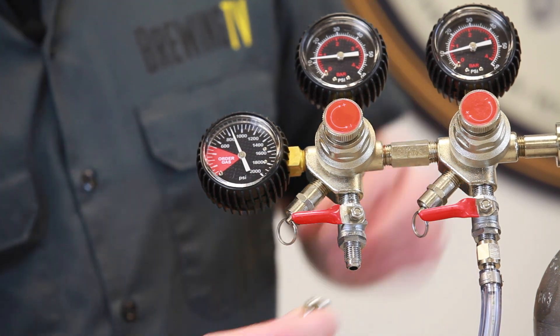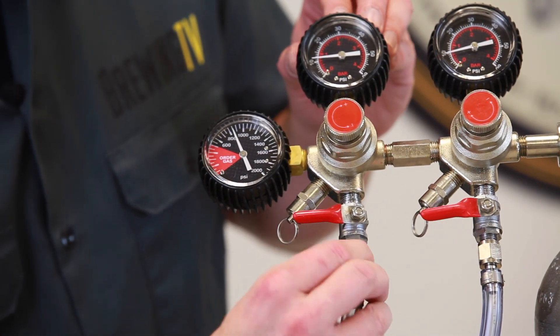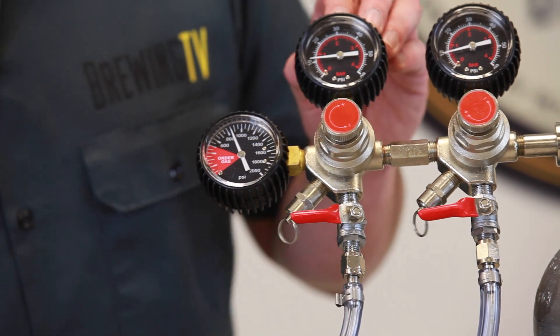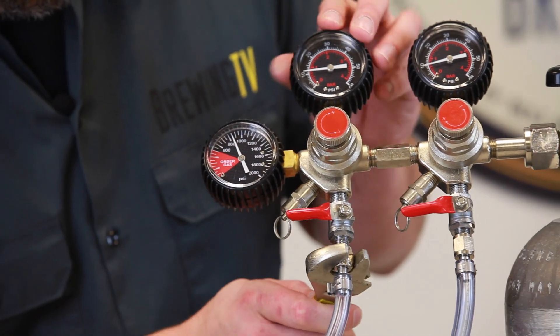Now remember, you've got to have two CO2 outputs, one to feed the keg and one to attach to the Laststraw. Same goes here, insert the gasket, thread on, and gently tighten.